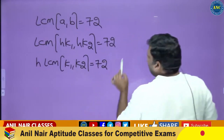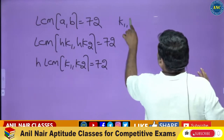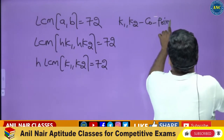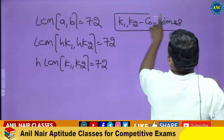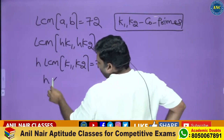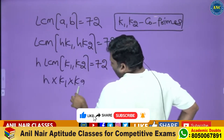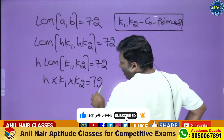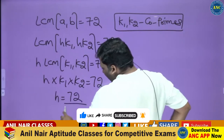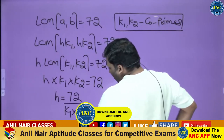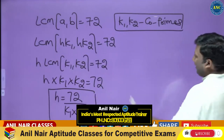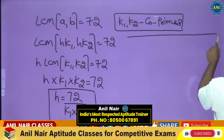Since k1 and k2 are co-primes, we get h·k1·k2 = 72. Therefore h = 72 / (k1·k2). Now listen carefully — we will use this with the question we just discussed.